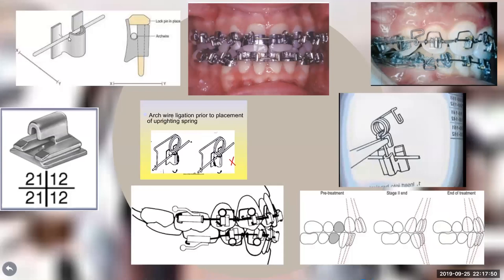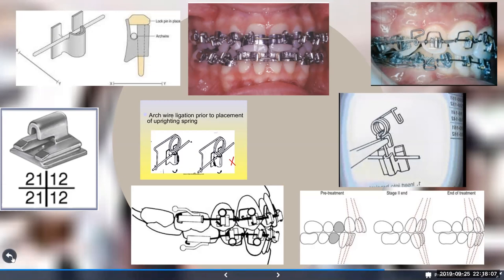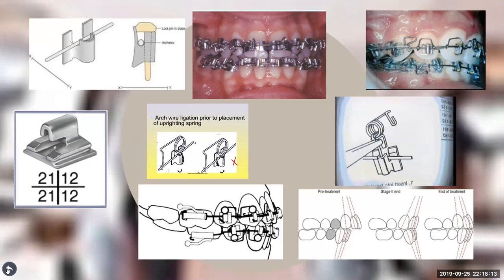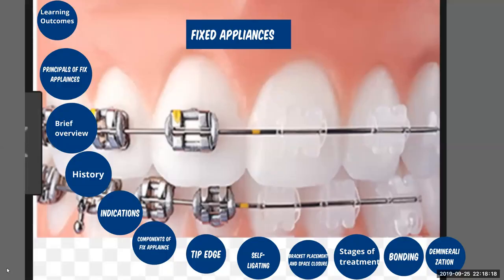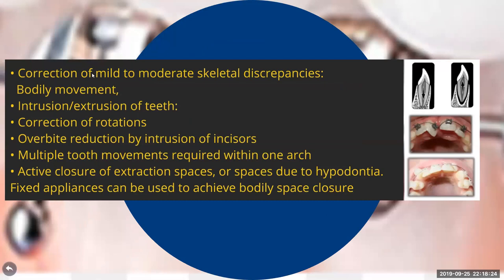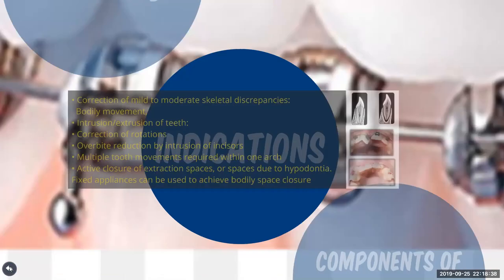Indications for fixed appliances include when complex tooth movements are needed such as intrusion, extrusion, derotation, and complex movements possible through two-point contact. Active space closure and bringing incisors into proper position are also indications. The different components of fixed appliances include bands (ring-shaped structures over the crown), brackets, ligatures (holding the arch wire in the bracket), arch wire, hooks, and elastics.